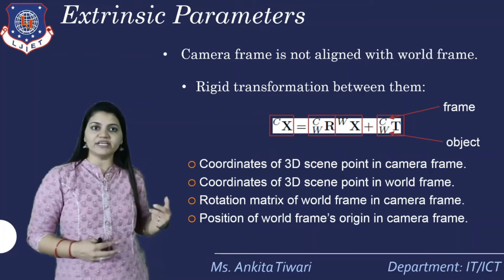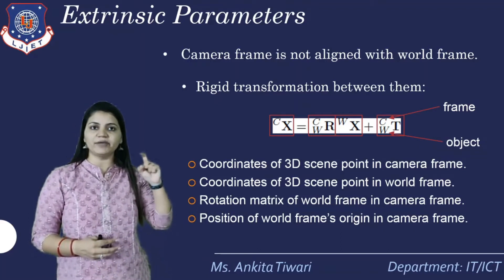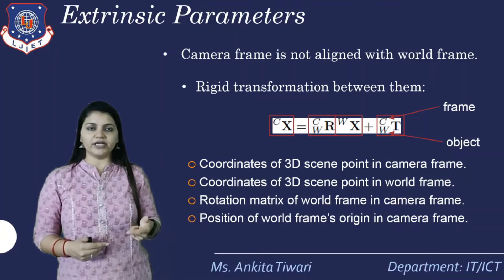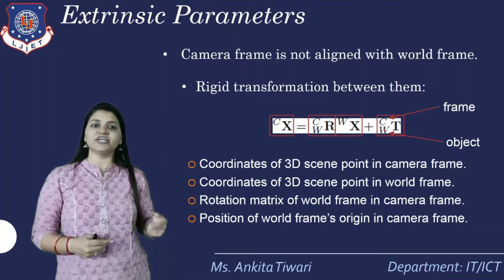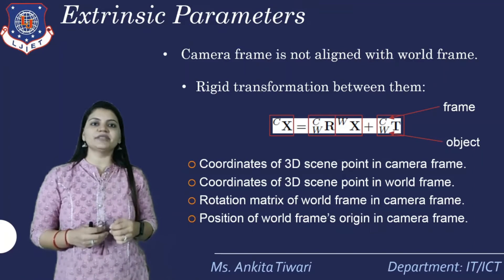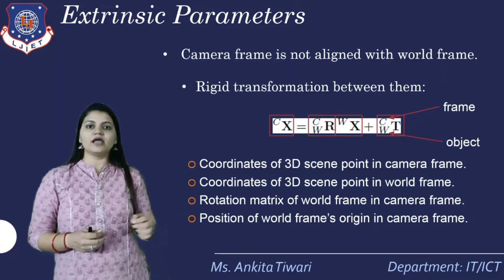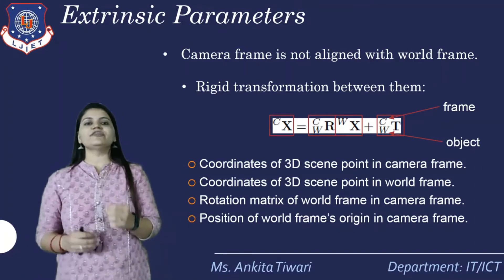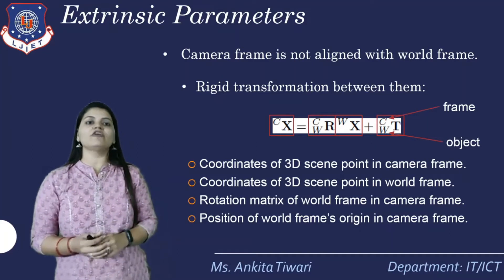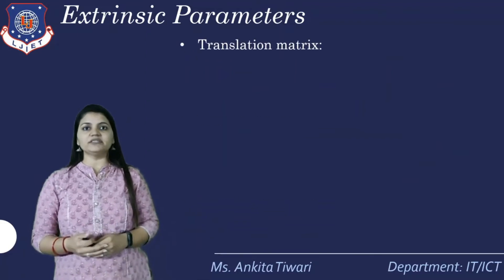The coordinates of a 3D scene point in the camera frame are denoted by C, and in the world frame by W. The rotational matrix of the world frame in the camera frame is R, and the position of the world frame's origin in the camera frame is defined by Cx. These are the different extrinsic parameters.